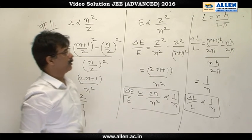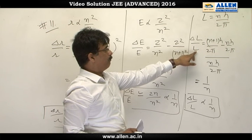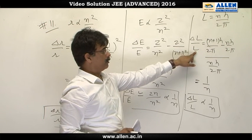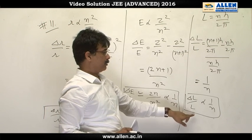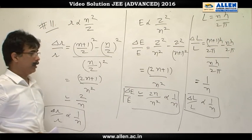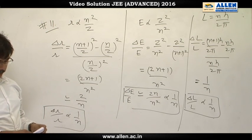And on similar procedure, we get delta l by l equal to 1 by n. So our answers are a, b, and d.